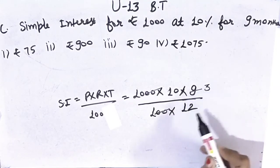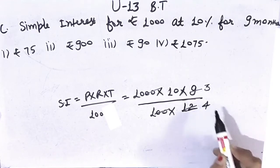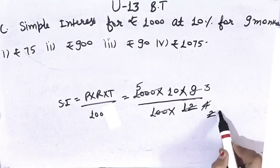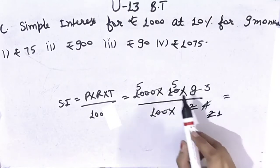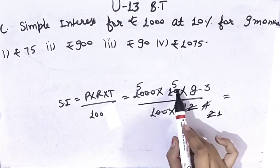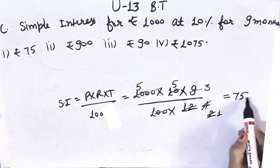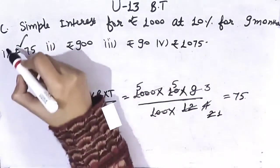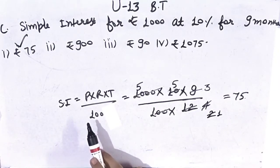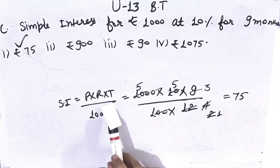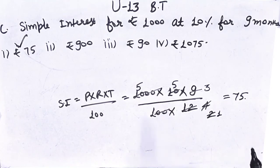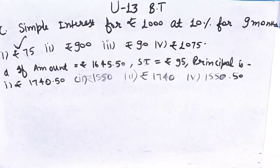After cancellation and simplification: 3 × 3 is 9, 3 × 4 is 12, 2 × 2 is 4, 2 × 5 is 10, 2 × 1 is 2, 2 × 5 is 10, 5 × 5 is 25, 25 × 3 is 75. 75 divided by 1 is 75. So which option is correct? First option — Rs.75. The formula is principal × rate of interest × time ÷ 100. After simplification our answer is 75, so the first option is correct.